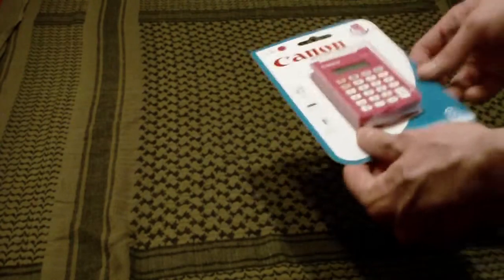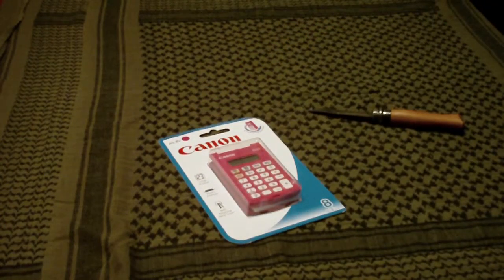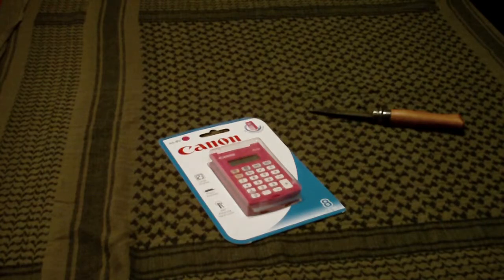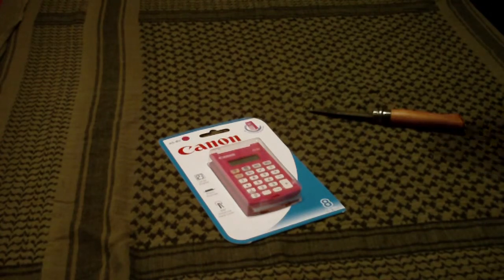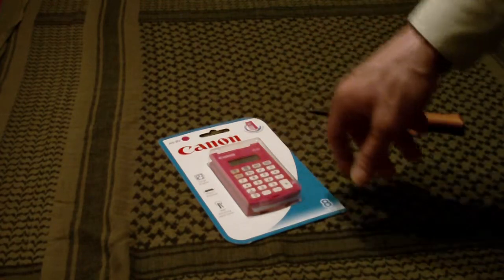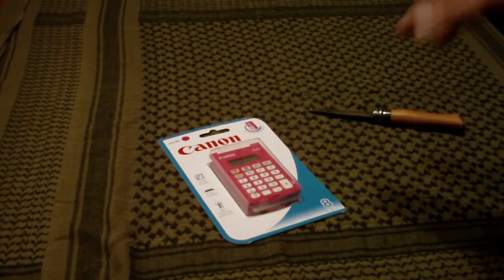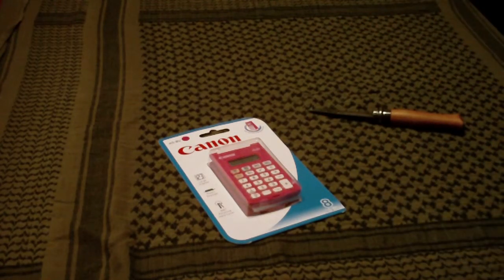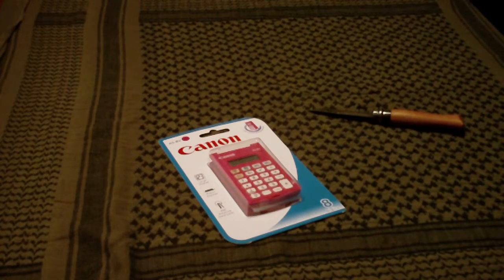And I have a very nice Casio FX something something. It's a solar version, the small solar version, it's almost the same size. But it's very dark in color and when I put it away in one of my drawers, I can never find it. Well, this one I will be able to find.